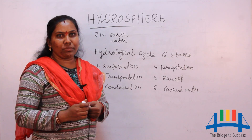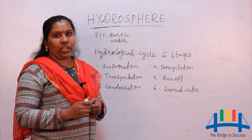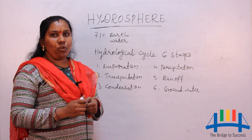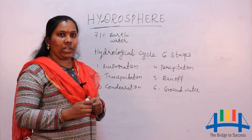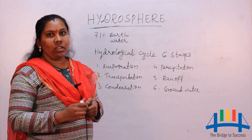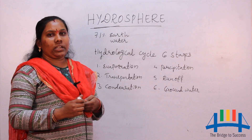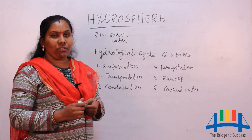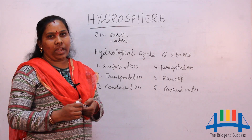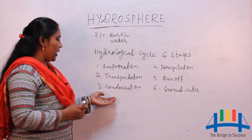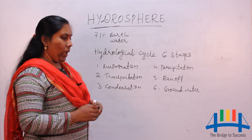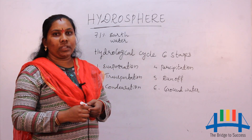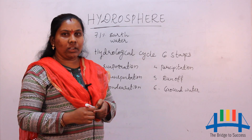The second stage is transportation. The water which has moved from the Earth's surface forms into clouds. Those clouds move from the water surface area to the land surface area by upper air circulation or surface air circulation — for example, the land and sea breezes.